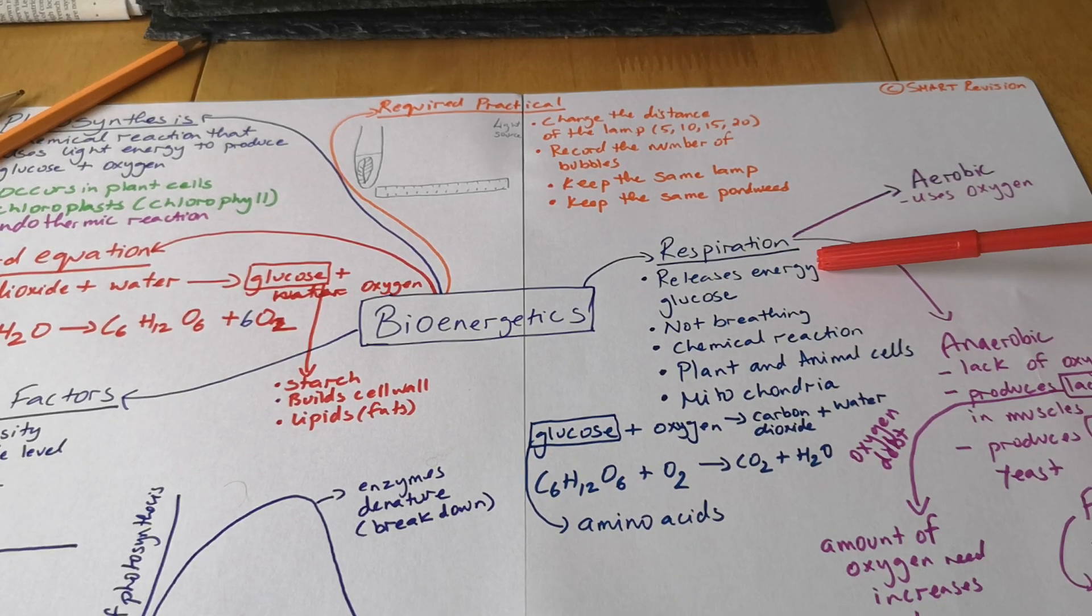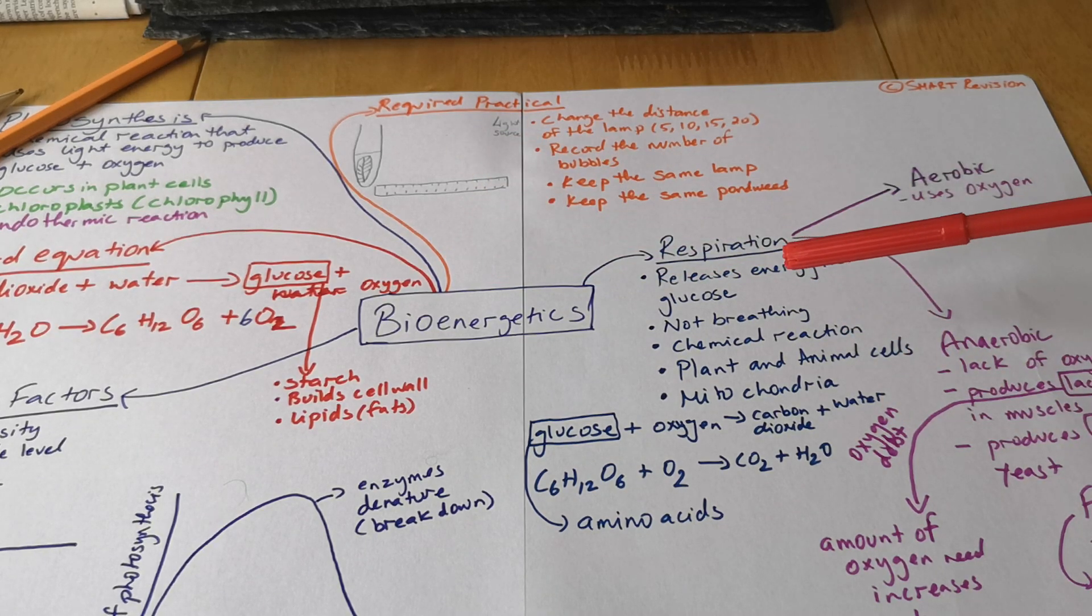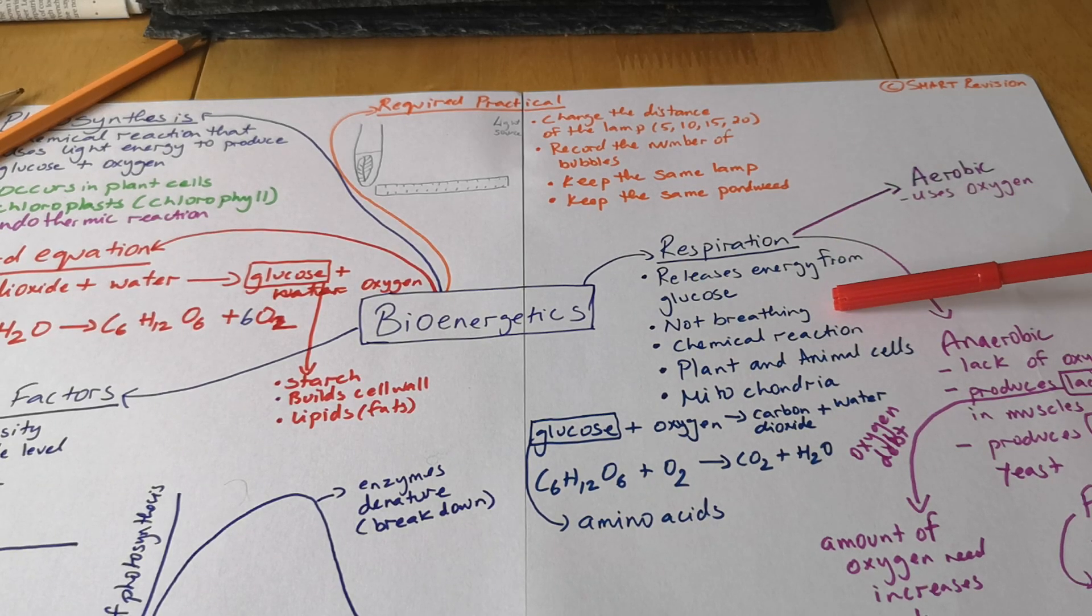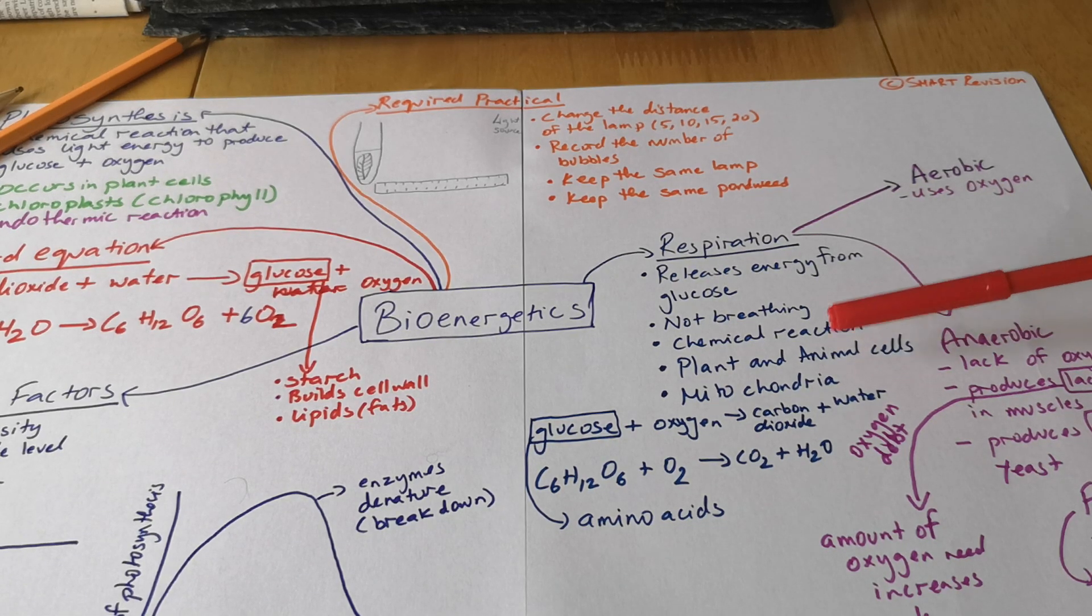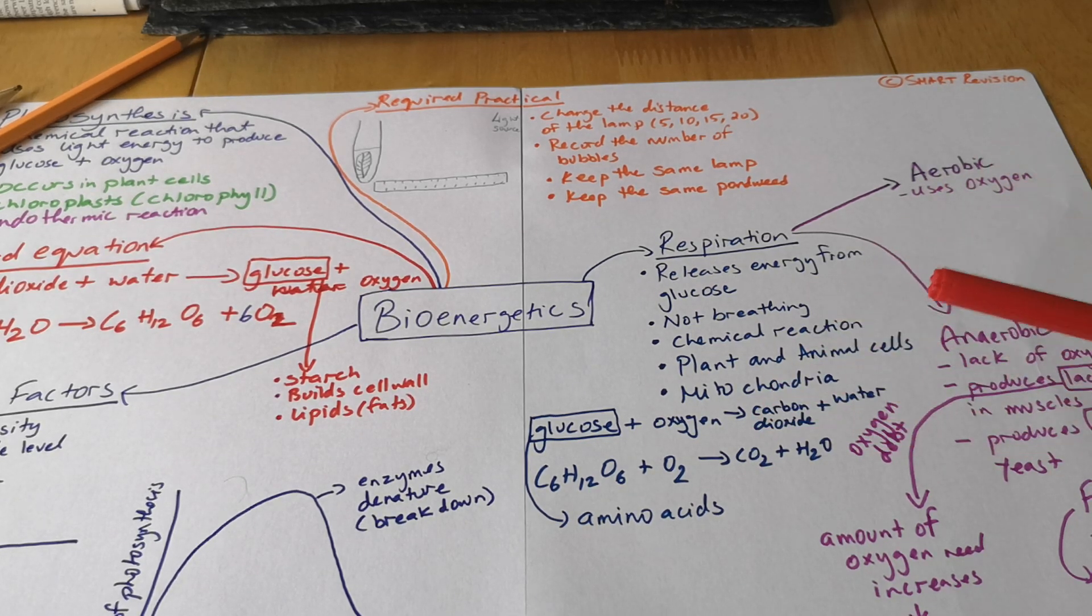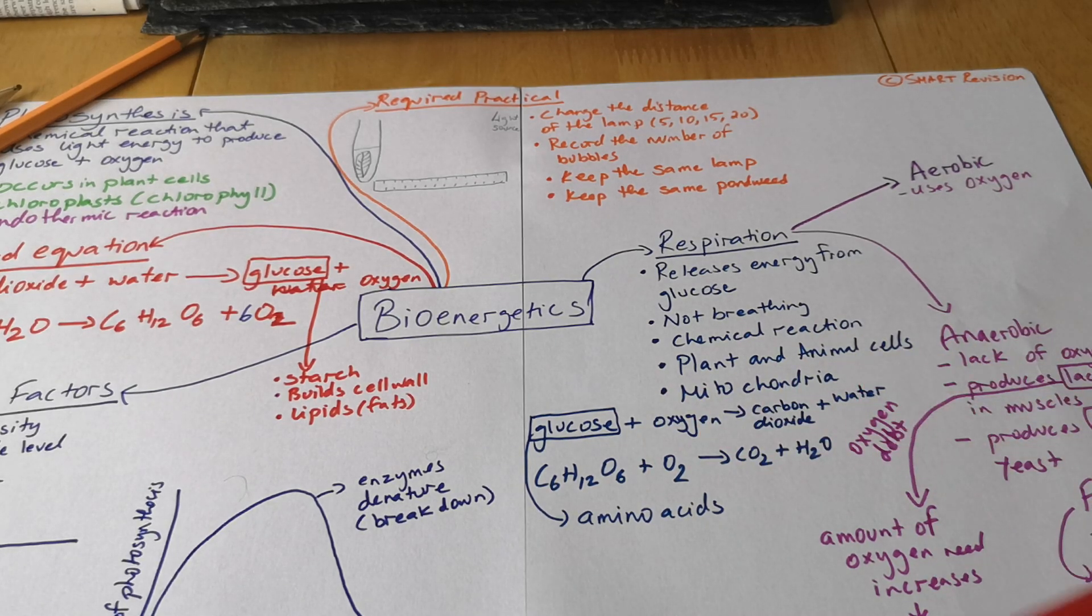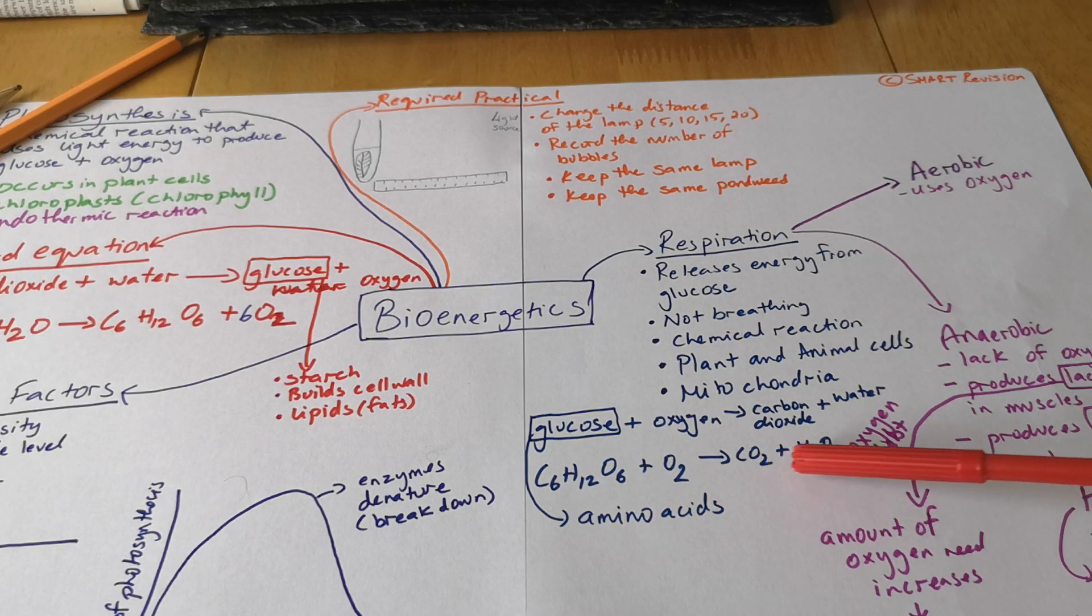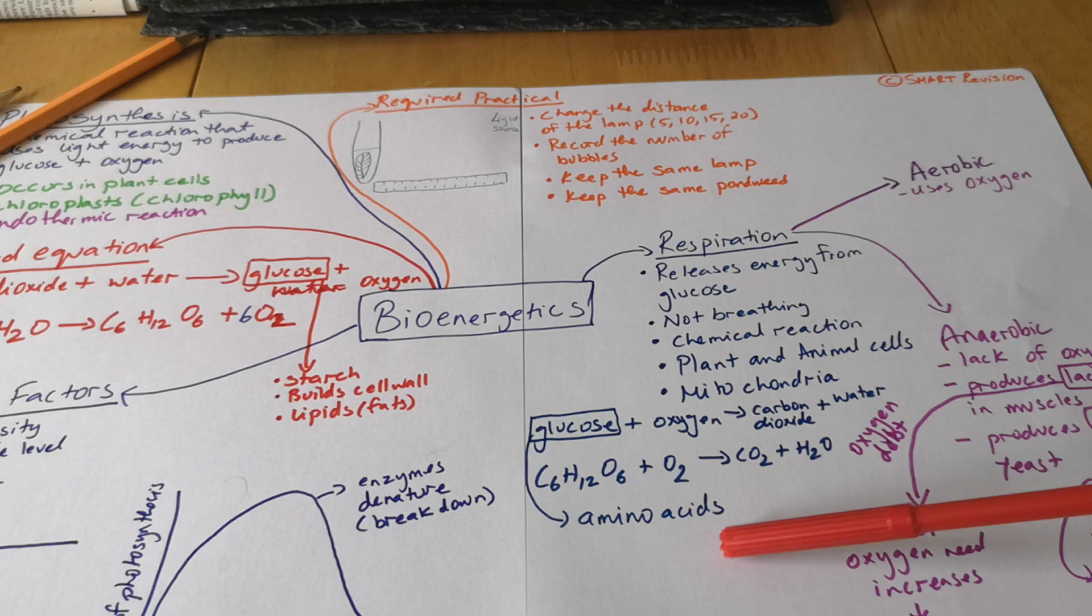Respiration, it releases energy from glucose. So the glucose that we made in photosynthesis, that's going to be used there. Now a lot of students talk of breathing, it's not breathing, it's a chemical reaction. Takes place in plant and animal cells, and takes place mainly in the mitochondria. If you go for that word equation, it's the complete opposite of photosynthesis: glucose plus oxygen gives carbon dioxide and water. And I've not balanced it but you can. What's this glucose used for? Well it makes proteins, makes amino acids. There's a few more but I've not listed all of them.